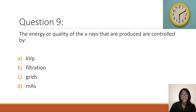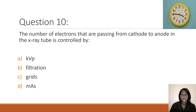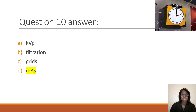Question 9: The energy or quality of the x-rays produced is controlled by kVp, filtration, grids, or mAs? The correct answer is kVp. Question 10: The number of electrons passing from cathode to anode in the x-ray tube is controlled by kVp, filtration, grids, or mAs? The correct answer is mAs.